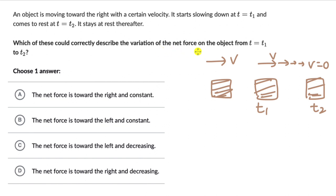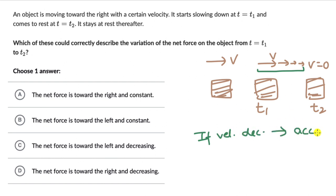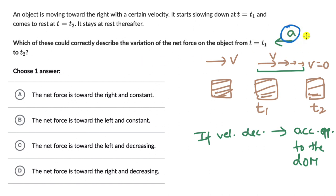Which of these could correctly describe the variation of the net force from t1 to t2? If velocity is decreasing, there must be an acceleration opposite to the direction of motion. Since the object is moving to the right, the acceleration would be to the left. And whenever there is an acceleration, there will be a force — because forces cause accelerations. According to Newton's second law, Fnet = ma, so if there is an acceleration there will be a force. That means there must be a net force to the left.